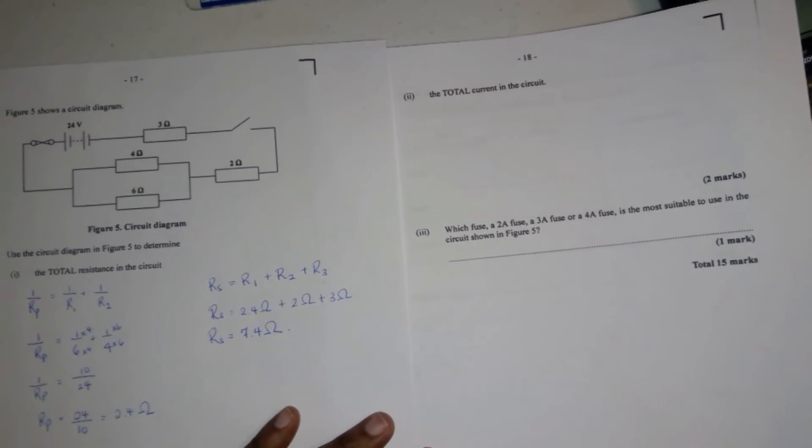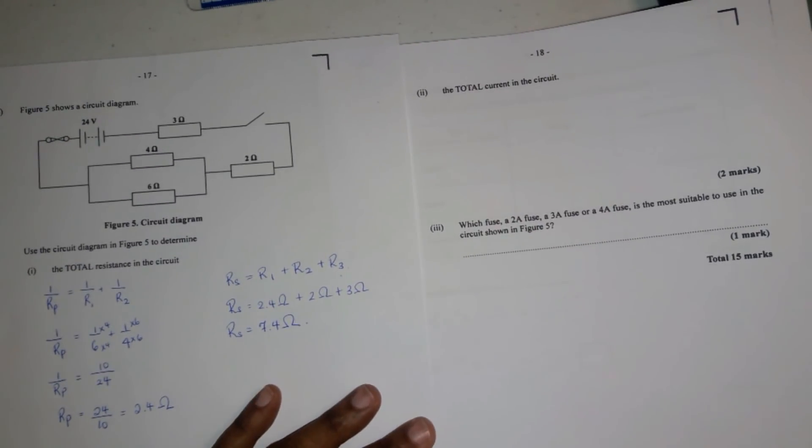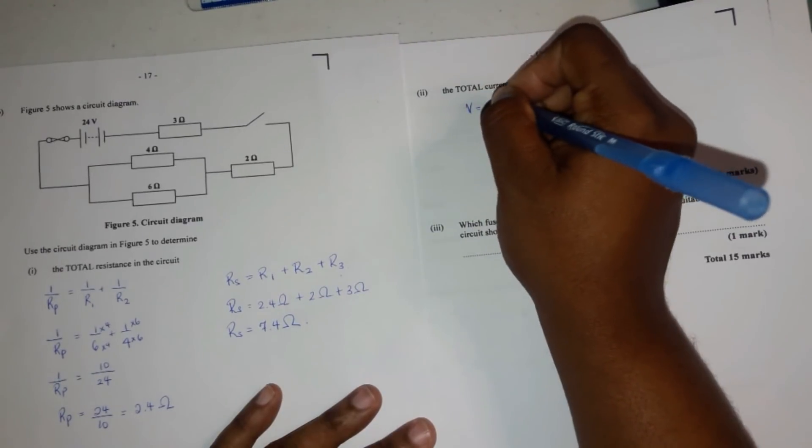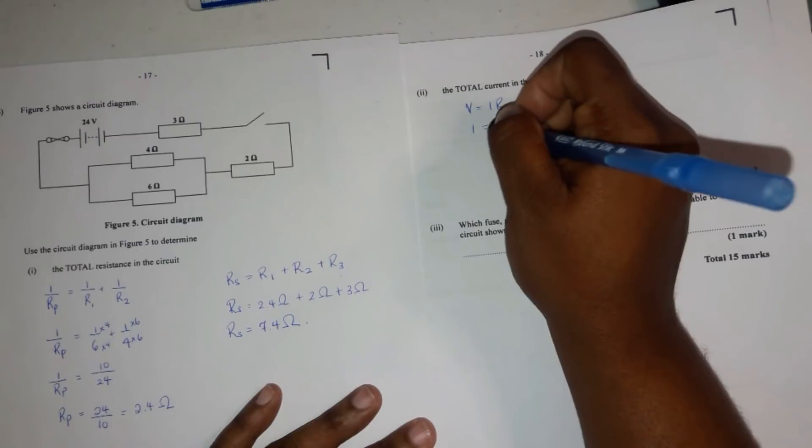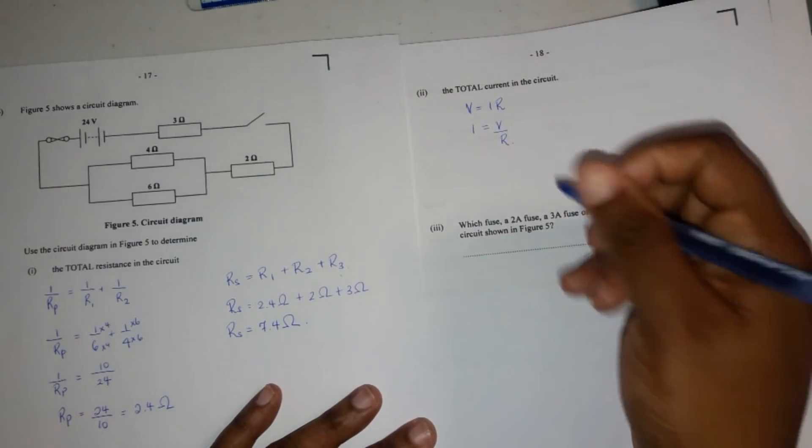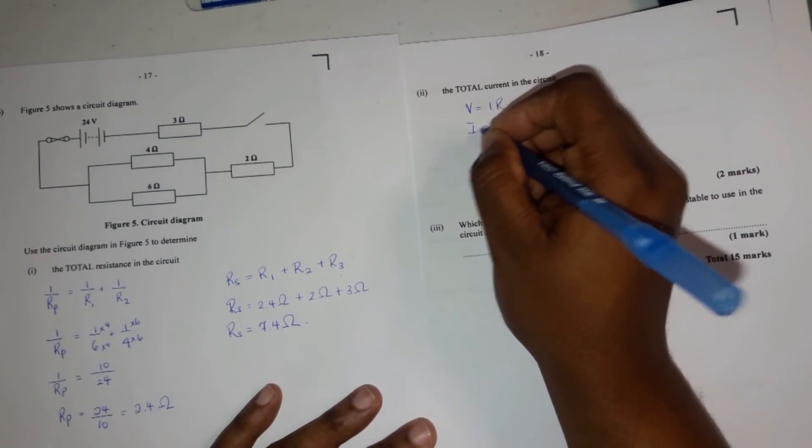Now, looking at question 3, this is the total current in the circuit. To calculate current, use V equals IR. Transpose, you get I equals V over R. Alright? So, let me put that answer.